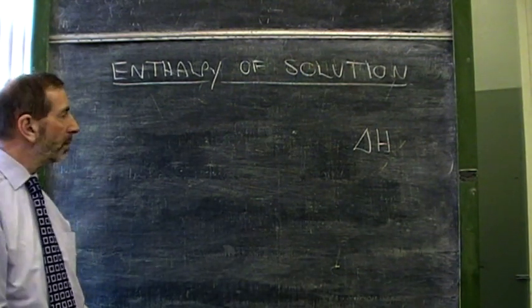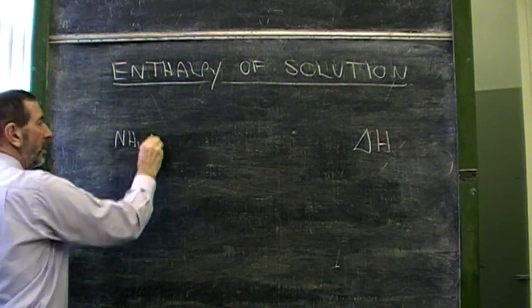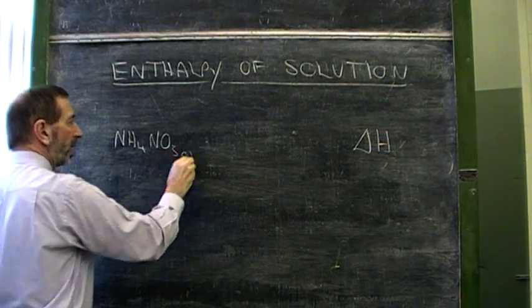How much of a substance? One mole. Take, for example, a compound like ammonium nitrate. Ammonium nitrate is a solid.